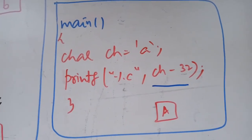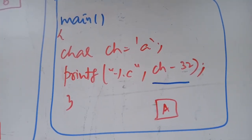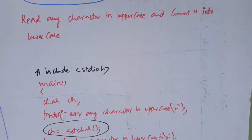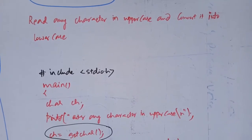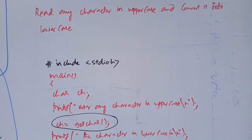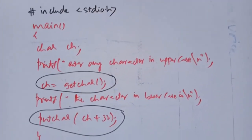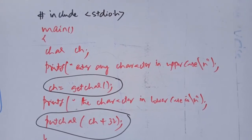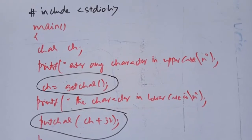If you have a small 'a' minus 32, then you have an uppercase character. This program will read any character in uppercase and convert it into lowercase using ASCII arithmetic.